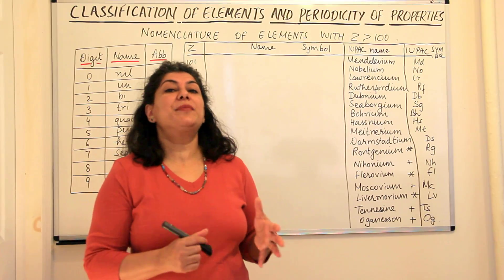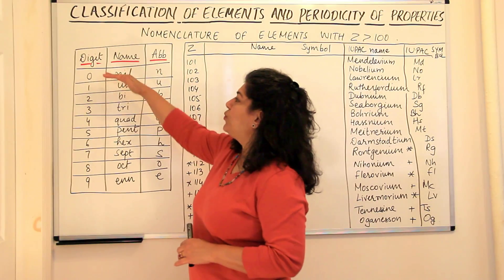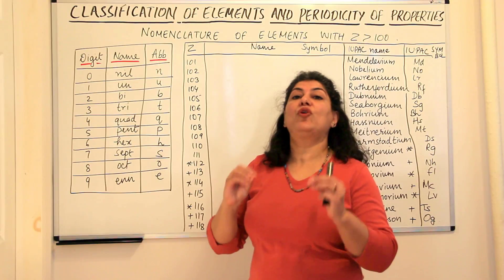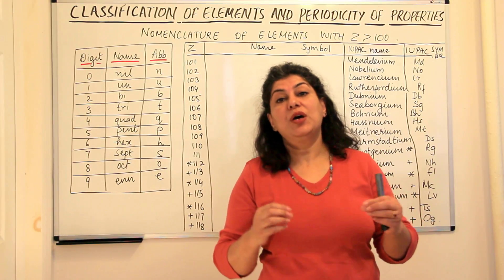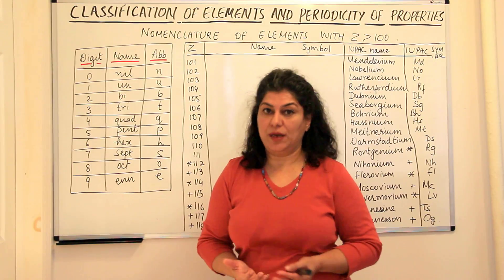So what this systematic way of naming is, let me explain that. The digits were given certain names and certain abbreviations and the names of these elements beyond hundred were given according to these digits, that is according to their atomic number.